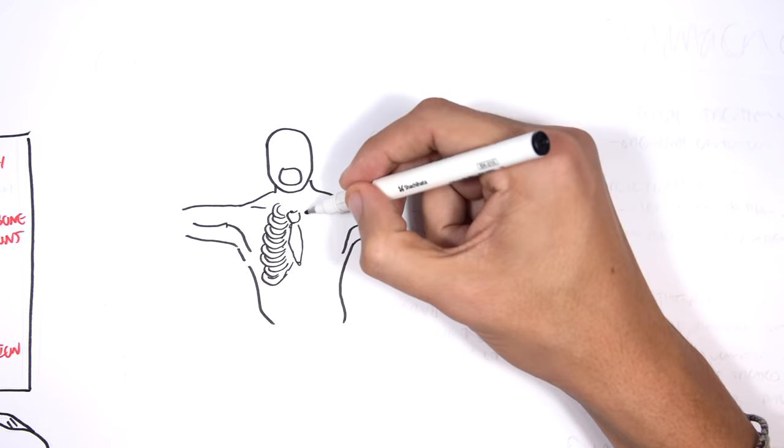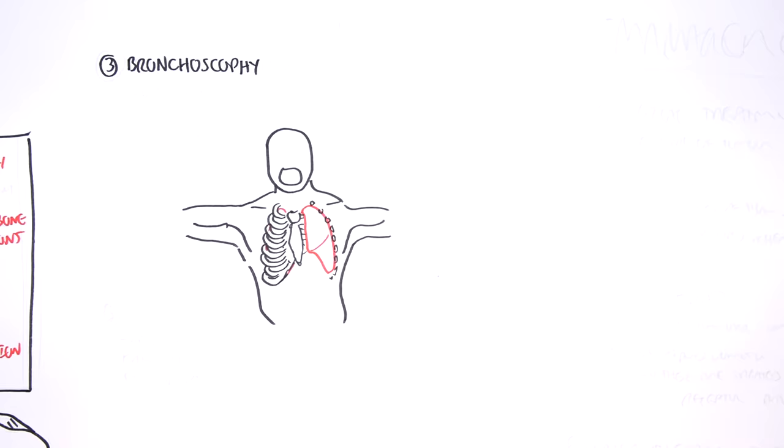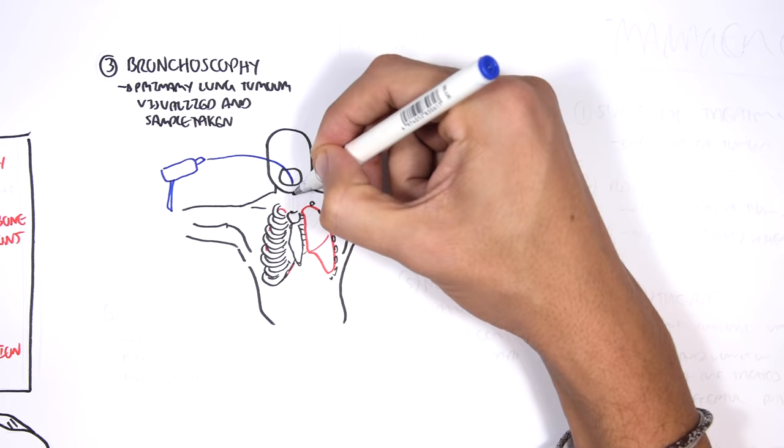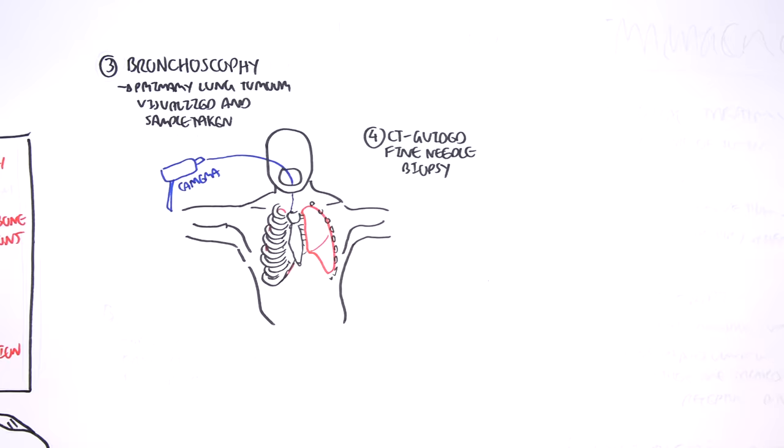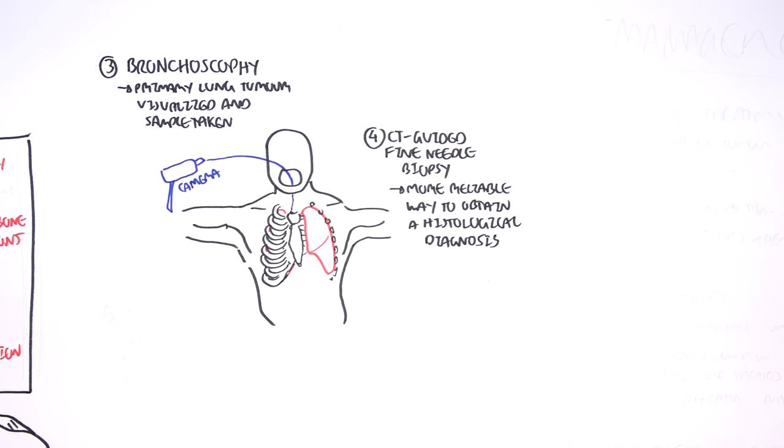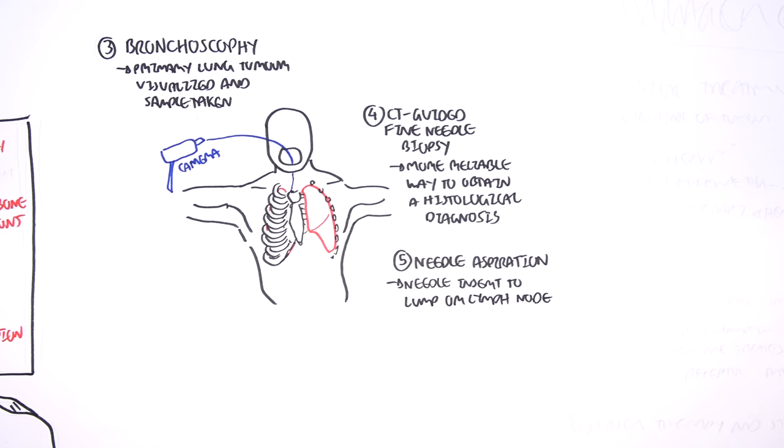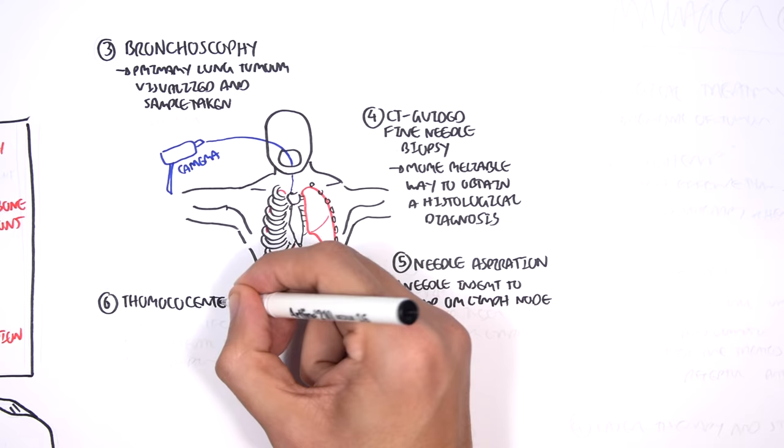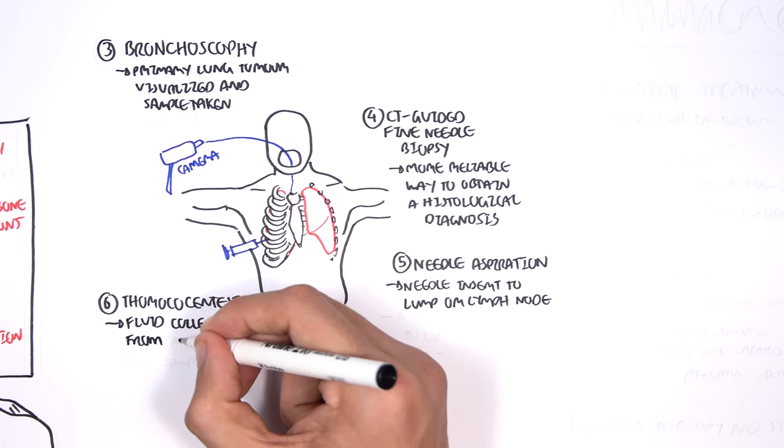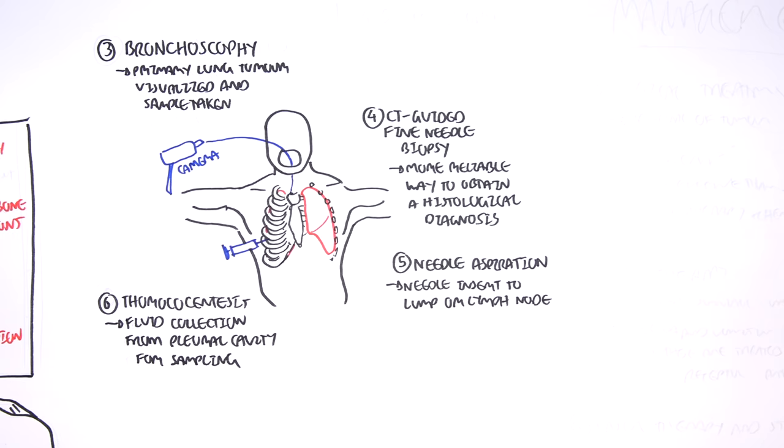Not only CT scans but biopsies are to be performed which include bronchoscopy, which is where the primary lung tumor is visualized and sample is taken using the instrument. You can also perform a CT-guided fine needle biopsy which is a more reliable way to obtain a histological diagnosis. A needle aspiration is where a needle is inserted in the lump on the lung or lymph node to see for lymph node involvement. Another form of investigation for biopsy is the thoracocentesis, which is where fluid is collected from the pleural cavity. And this is used for sampling.